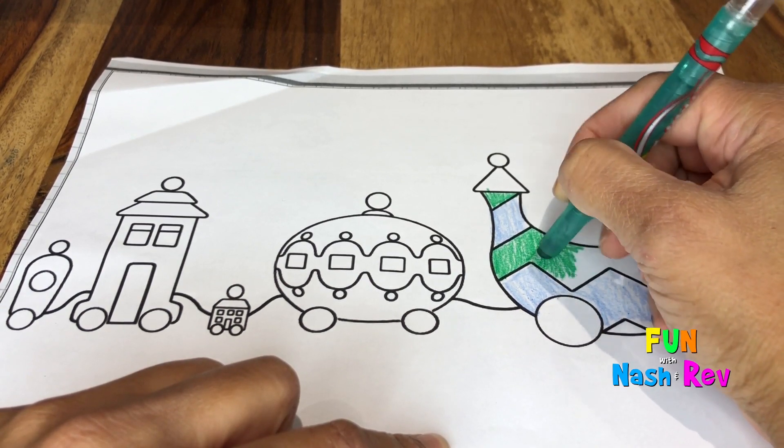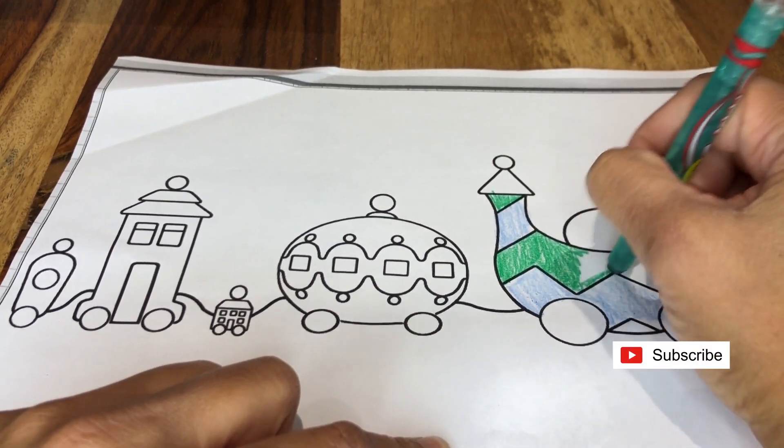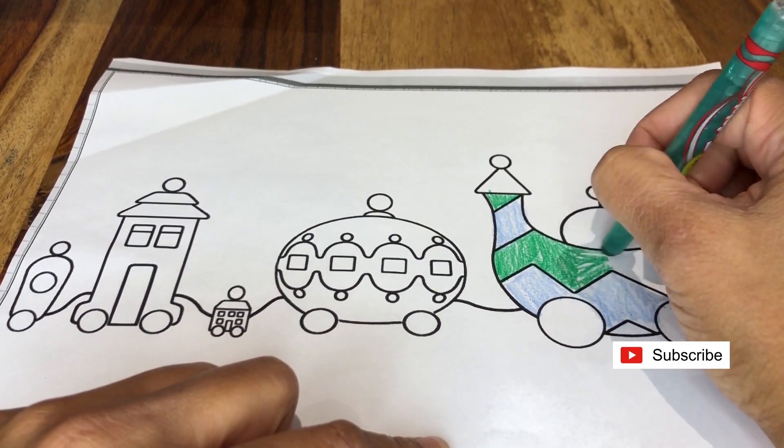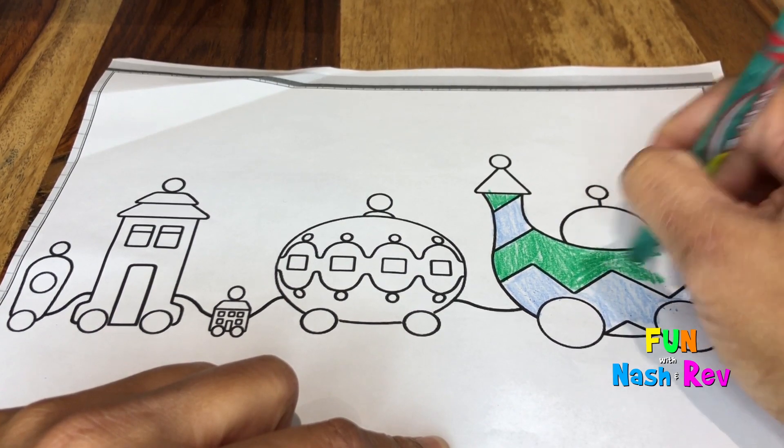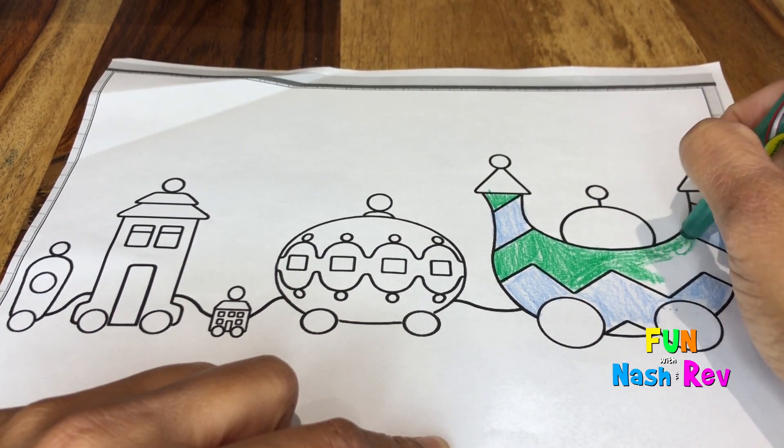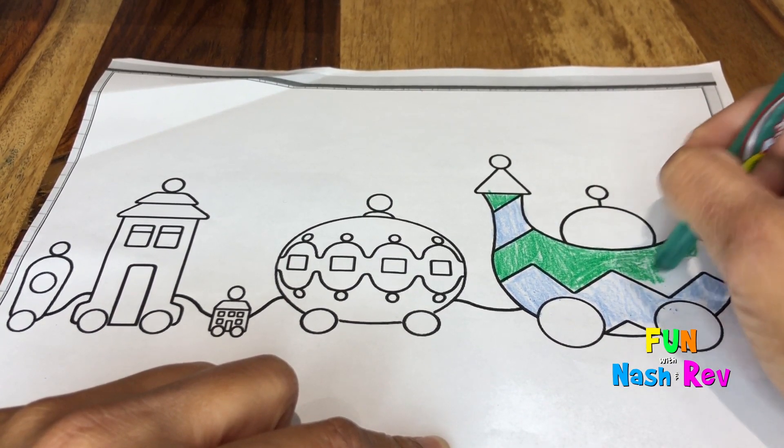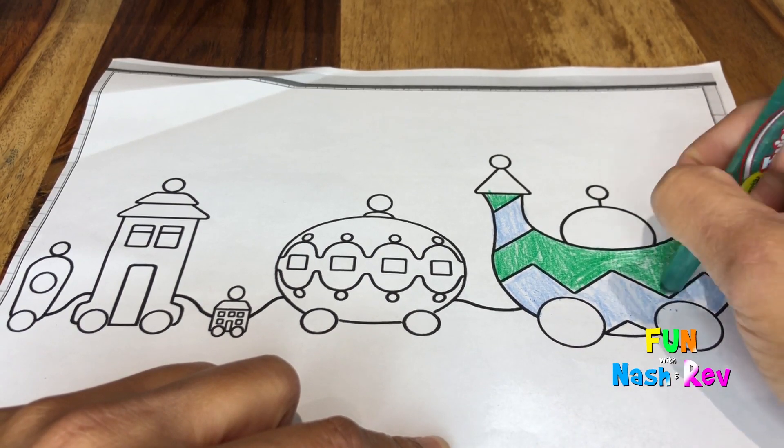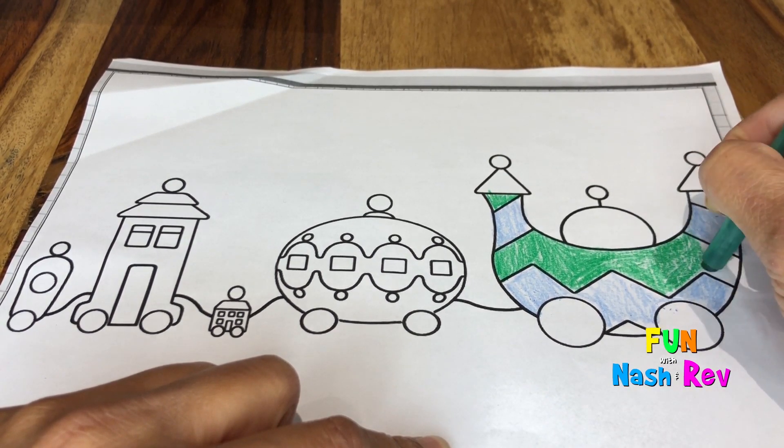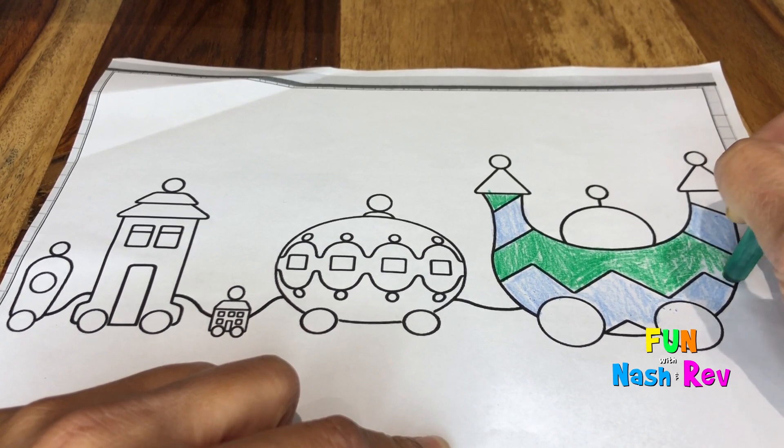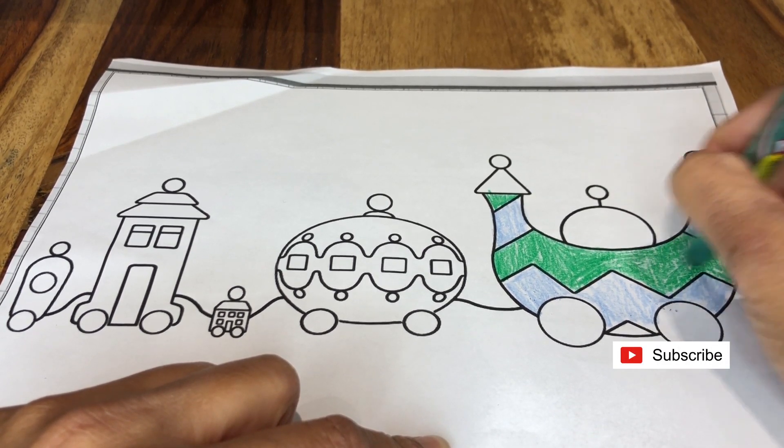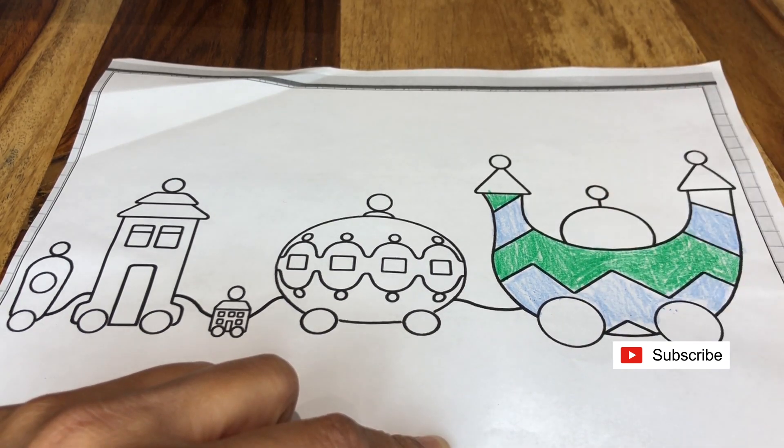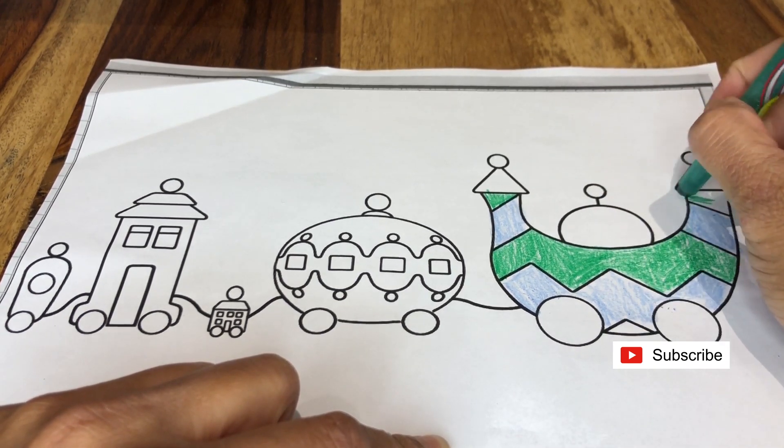Trying to color neatly in between the lines but also trying to color quickly. That's a nice color green, it's like the colors of grass in the summertime or the colors of trees. Let's do this part too.